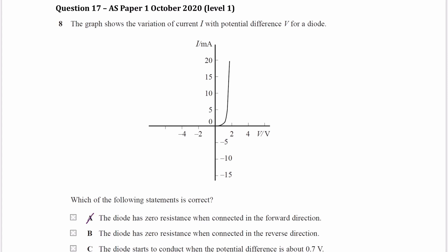For B, it's the same kind of thing. The diode has zero resistance. It never has zero resistance. It's not a superconductor, and therefore it wouldn't have zero resistance. So that is also not true.